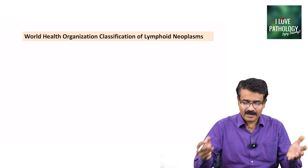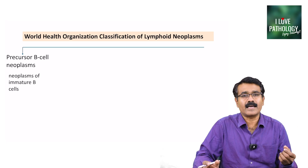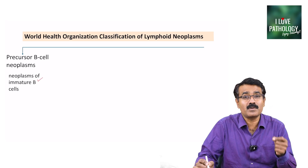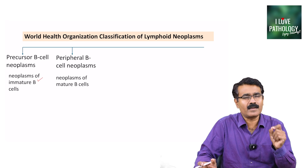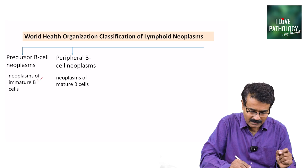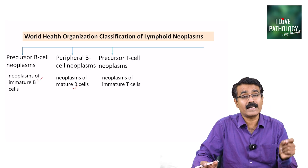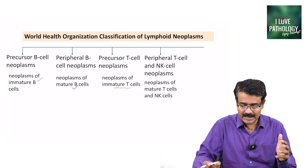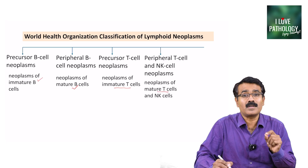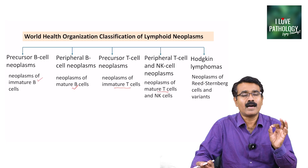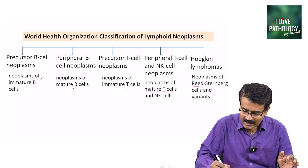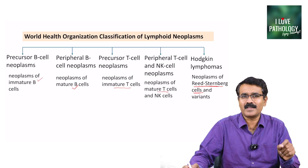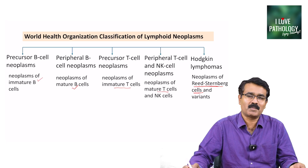How does the WHO classify lymphoid neoplasms? They are broadly categorized as: precursor B-cell neoplasms — neoplasms of immature B cells; peripheral B-cell neoplasms — neoplasms of mature B cells; precursor T-cell neoplasms — neoplasms of immature T cells; peripheral T-cell and NK-cell neoplasms — neoplasms of mature T cells and NK cells; and lastly, Hodgkin lymphomas — neoplasms of Reed-Sternberg cells and variants. I have covered Hodgkin lymphoma extensively and will provide the link in the description below.